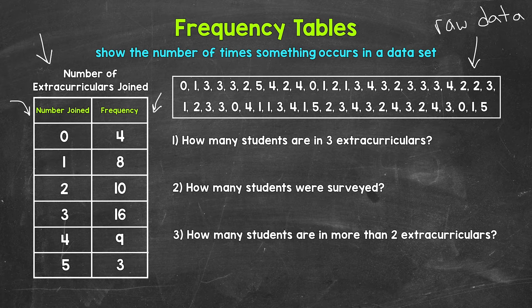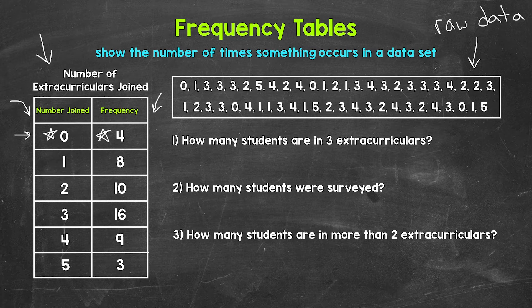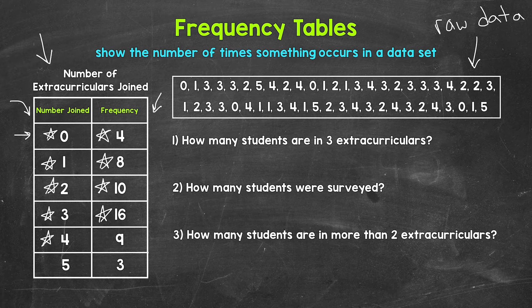Let's read this table. How many students aren't in any extracurricular activities? Looking at 0 extracurriculars joined, there are 4 students. How about 1? There are 8 students in 1 extracurricular. How about 2? 10 students. 3? There are 16 students. 4? There are 9 students. And then 5? There are 3 students. So you can see that this frequency table really helps organize and present the data in a meaningful and easier to understand way than looking at the raw data.